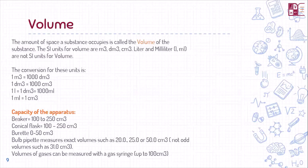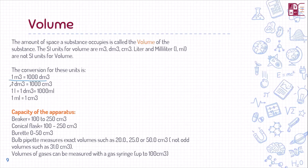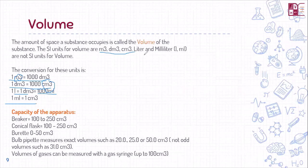Liters and milliliters are not the SI units of volume. Important conversions you need to know: 1 meter cubed = 1000 decimeter cubed; 1 decimeter cubed = 1000 centimeter cubed — so centimeter cubed is the smallest and meter cubed is the largest. Also: 1 liter = 1 decimeter cubed; 1 liter = 1000 mL; and 1 mL = 1 centimeter cubed.